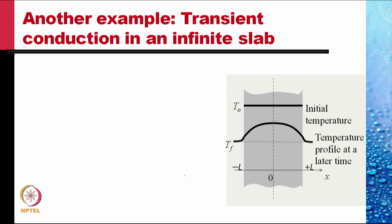After submersion, the temperature profile changes with time, and after infinite time the slab temperature becomes uniform at Tf. The governing equation is: ∂T/∂t = α ∂²T/∂x², where α = k/(ρCp) is the thermal diffusivity, a material property of the slab.